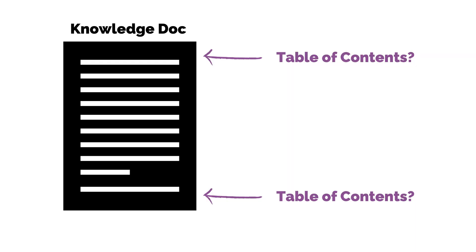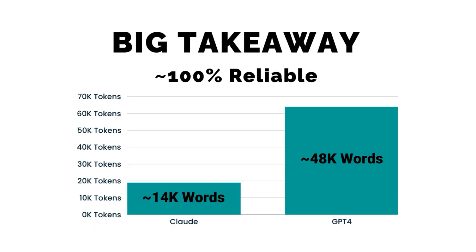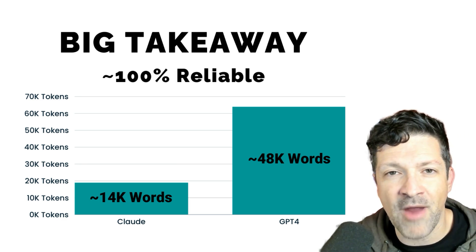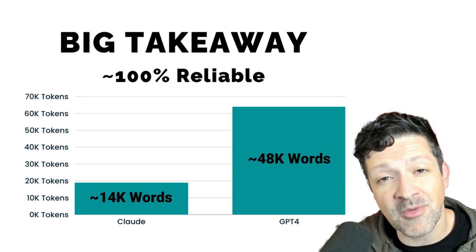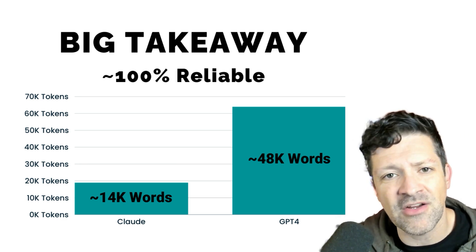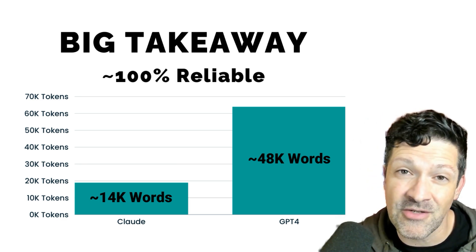I've heard that placing a table of contents at the start and end of these documents may aid in the retrieval accuracy of these models. However, for production-grade workflows, you probably want to aim for as close to 100% accuracy as possible. That means if you're using Claude, you should stick to the 19,000 token limit, and if you're using GPT-4, you might reliably be able to push that up to 64,000 tokens, according to these tests. These limitations are also helpful for designing a RAG, or Retrieval Augmented Generation, system. When pulling information from a large library of documents into your context window, it probably makes sense to stay within these thresholds.